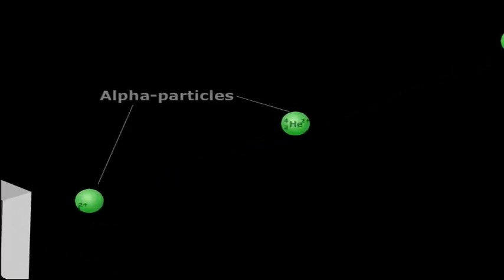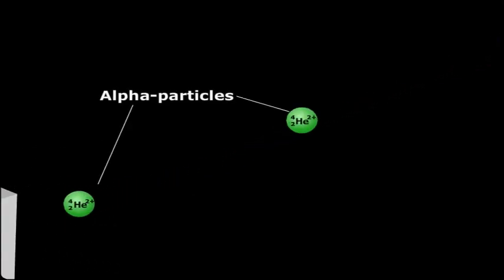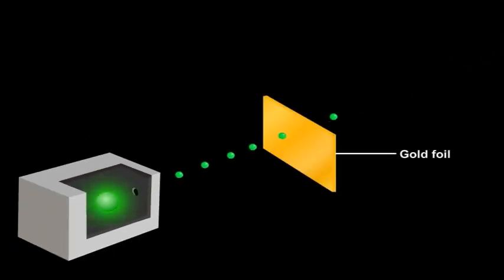While performing experiments on radioactivity, Ernest Rutherford bombarded fast-moving alpha particles on a thin gold foil. He observed the reflection of the alpha particles with the help of a screen.